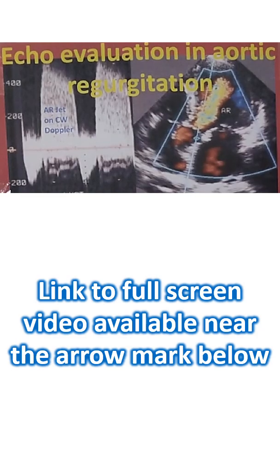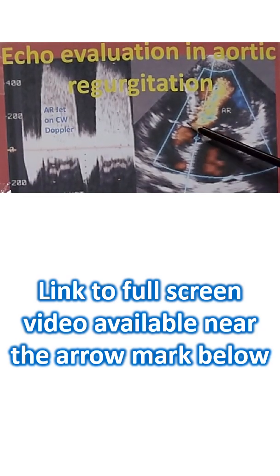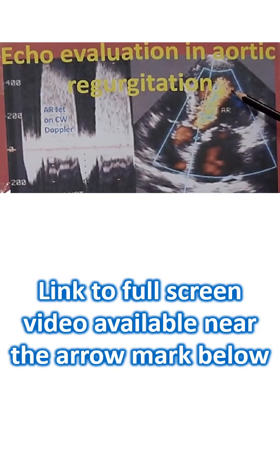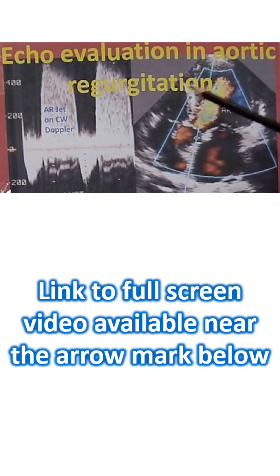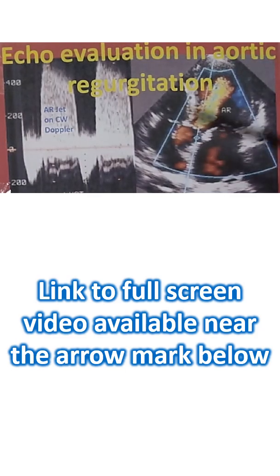This image shows evaluation of aortic regurgitation from the apical 5-chamber view. This is the aorta, left ventricle, left atrium, right ventricle, right atrium. So this is known as the 5-chamber view.